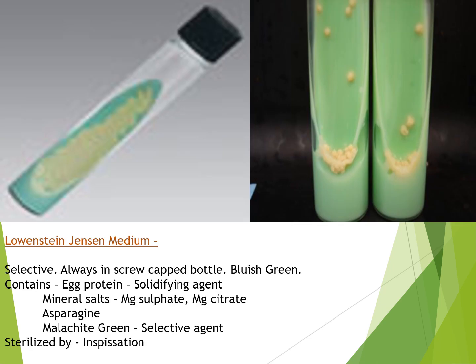Lowenstein-Jensen media is selective and is always in a screw-capped bottle, and it is blue-green in colour. It contains egg protein, solidifying agents such as mineral salts, magnesium sulphate, magnesium citrate, and asparagine. Malachite green is the selective agent, and it is sterilized by inspissation.